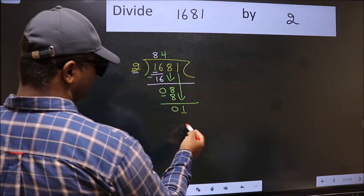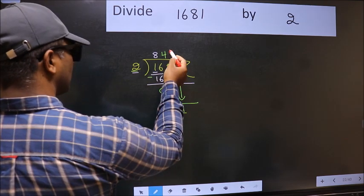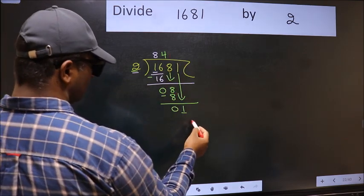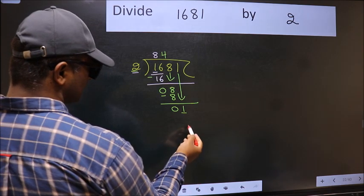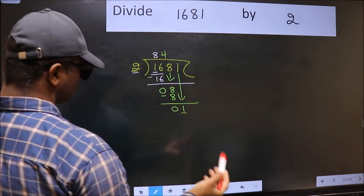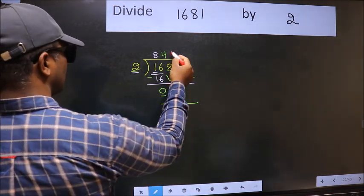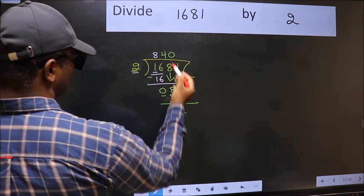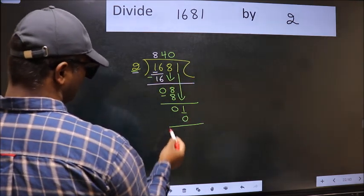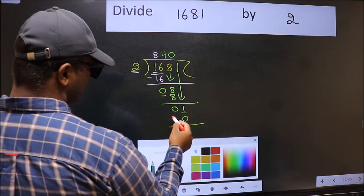Which number should we take here? If I take 1, we will get 2, but 2 is larger than 1. So what we should do is we should take 0. So 2 into 0 is 0. Now we should subtract.